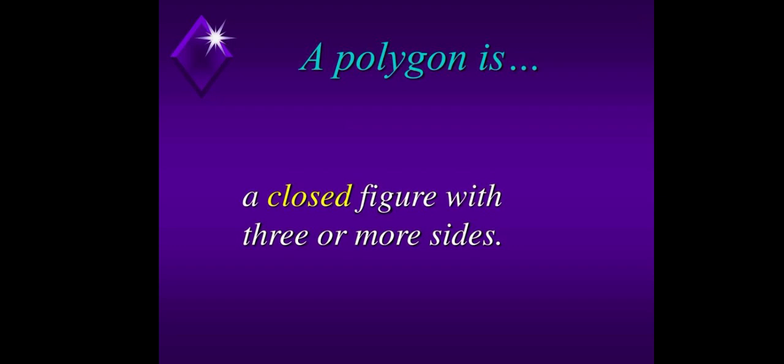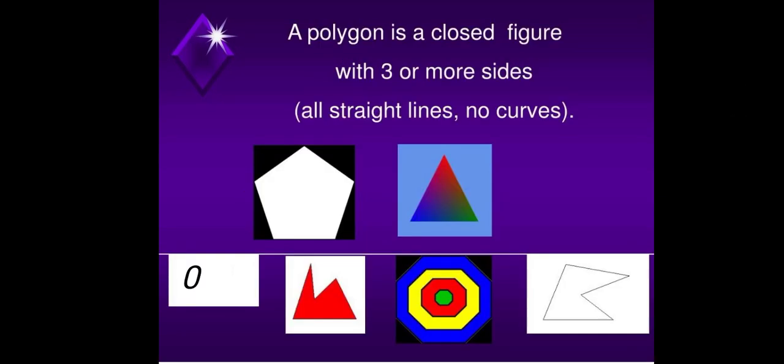For the discussion, a polygon is a closed figure with three or more sides. The clue here is closed figure. So those sides could be straight lines, no curves.